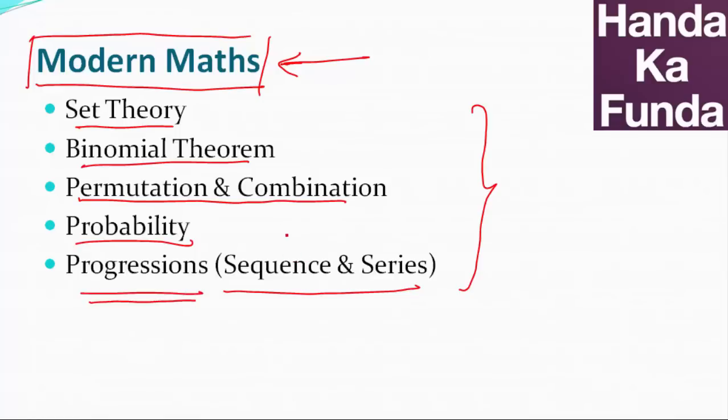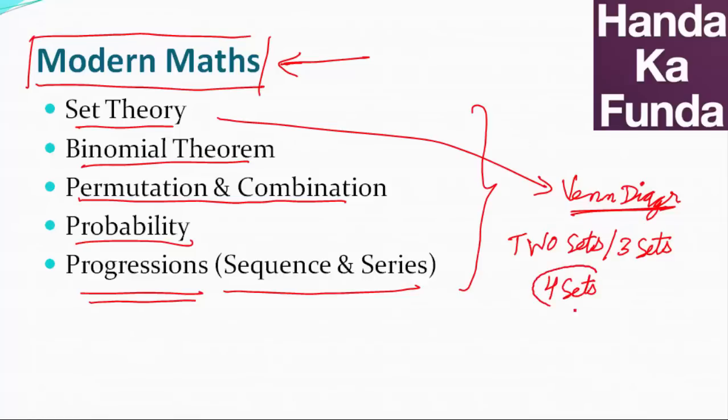Now, let's look at what do they exactly mean. In set theory, basically, you should be comfortable with Venn diagrams. That's really important because if you are comfortable with Venn diagrams, you can essentially solve any set theory question. Max to max, two sets or three sets is what you should be very comfortable with. You should also know how to solve a set theory question if there are four sets which are involved. I think it was in CAT 2013 probably when a question on four sets was asked and other than that, I do not remember a single instance of a question on four sets being asked in CAT.